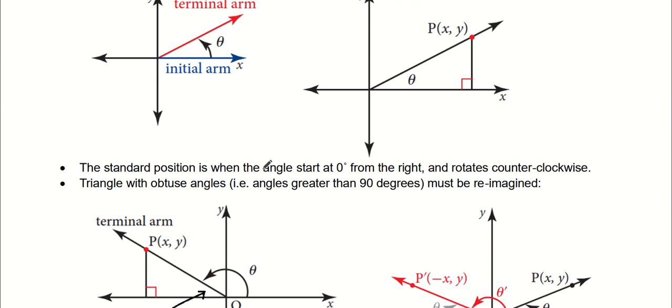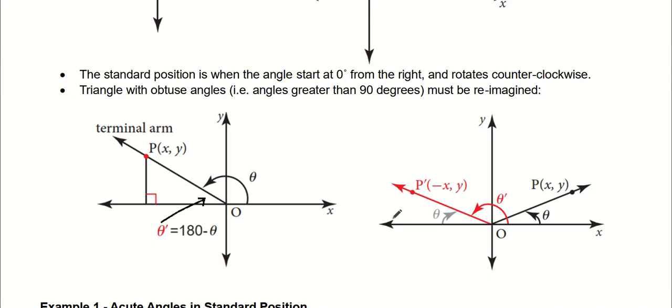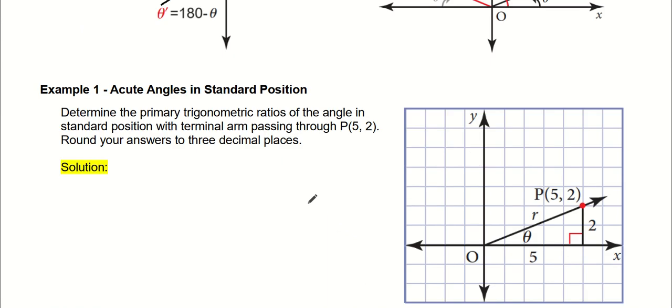So again, the standard position is when the angle starts at zero, here is zero, and it rotates clockwise. The triangle with an obtuse angle must be reimagined. If you're rotating it more than 90 degrees, then you end up here, and then you can reimagine your triangle like this, the 90 degree angle here. But the coordinates will be different. The triangle will be essentially the same, but the coordinates are somewhat different. Same thing here. This is just a reflection on the y-axis, but in the sense that this angle here is the same as this angle here, and the only difference is that this is more than 90 degrees.